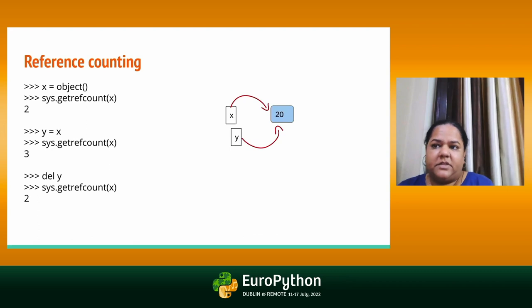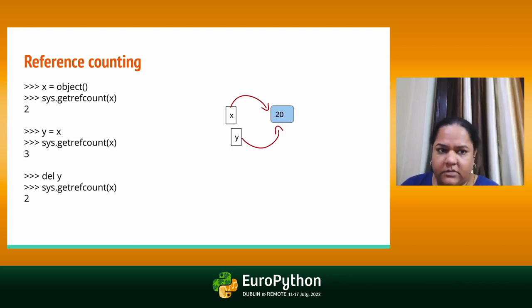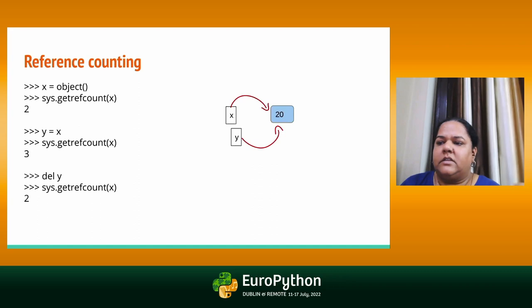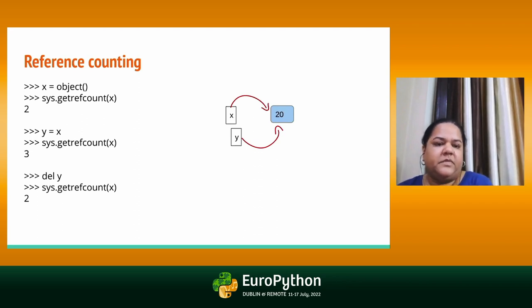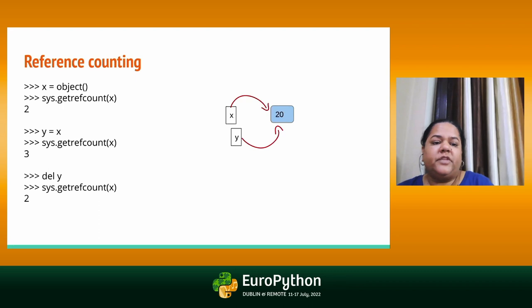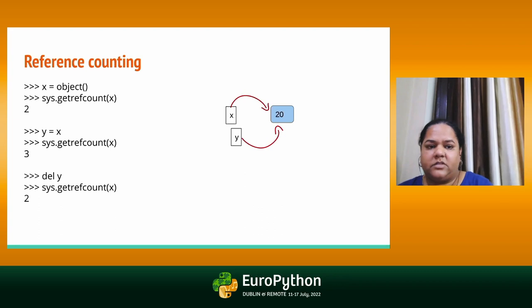The reference count field can be examined using a function called getrefcount, which is part of the sys module available in Python. Note that the value returned by this function is always one more than expected, because the function also holds a reference to the object when it is called. So when you assign x equal to an object, the reference count was one. When you call getrefcount, it is actually referencing the variable x, so it increments to two.